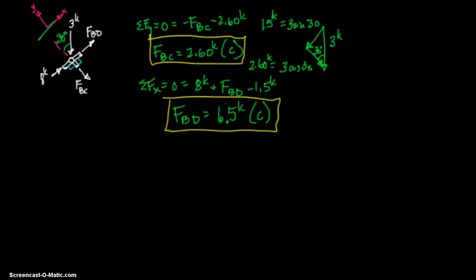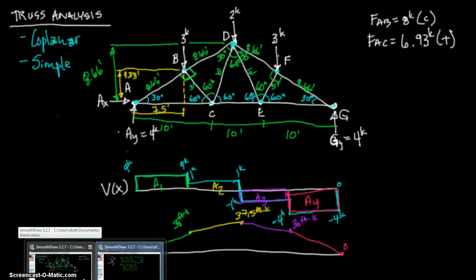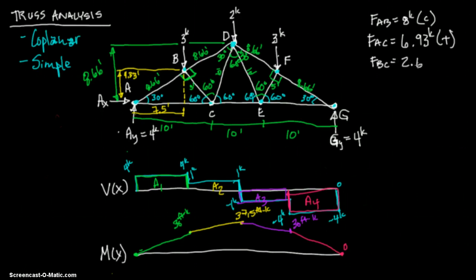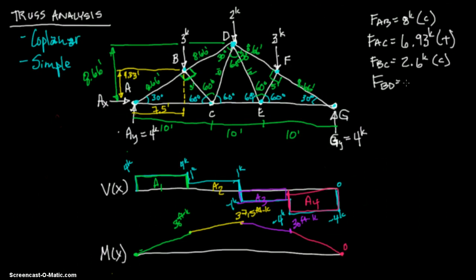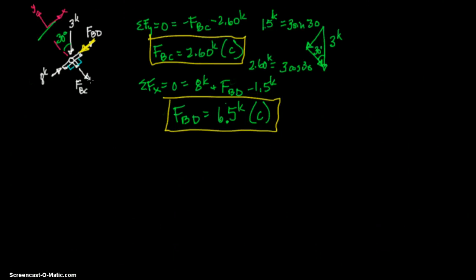Now let's transfer that back to our main page. So we have a constant. Usually you do this on one sheet, but obviously on the computer it's a little bit different. So we had FBC equals 2.6 kips in compression. And we had FBD equals 6.5 kips in compression. And going back, since these were both opposite, remember, and I probably should have done this right away, just so it doesn't confuse. But since those are in compression, and they were negative, we have to change the convention of these two loads.